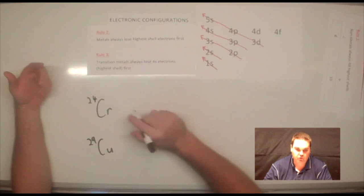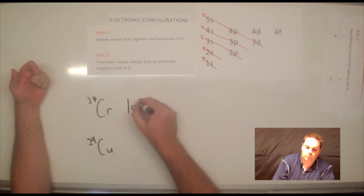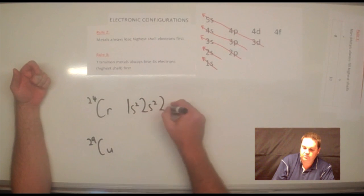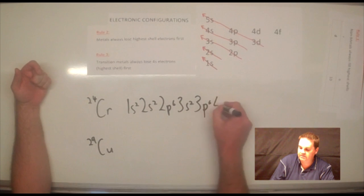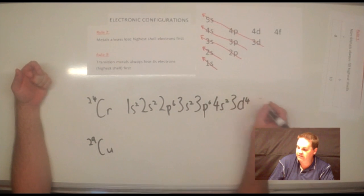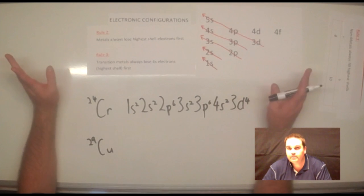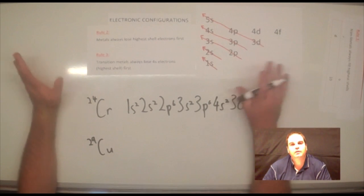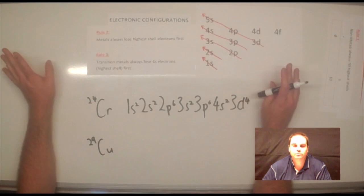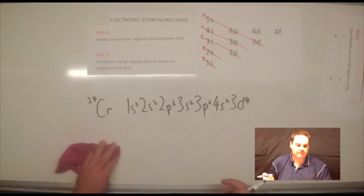When you're going through and doing these electronic configurations firstly, you do them like you do normally. So chromium, 1s2, 2s2, 2p6, 3s2, 3p6, 4s2, 3d4. Now, that should be your normal electronic configuration. However, there's something special about the d orbitals that you need to know. And I'll actually rub this out a little bit.